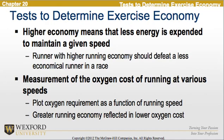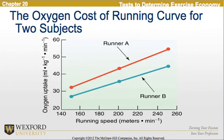Looking at tests to determine exercise economy, higher economy means that less energy is expended to maintain a given speed. A runner with a high running economy should defeat a less economical runner in a race. Looking at the measurement of the oxygen cost of running at various speeds, we plot the oxygen requirement as a function of running speed, where greater running economy is reflected as a lower oxygen cost. Here is an example of the oxygen cost of running curve for two subjects; runner B has a lower oxygen cost.